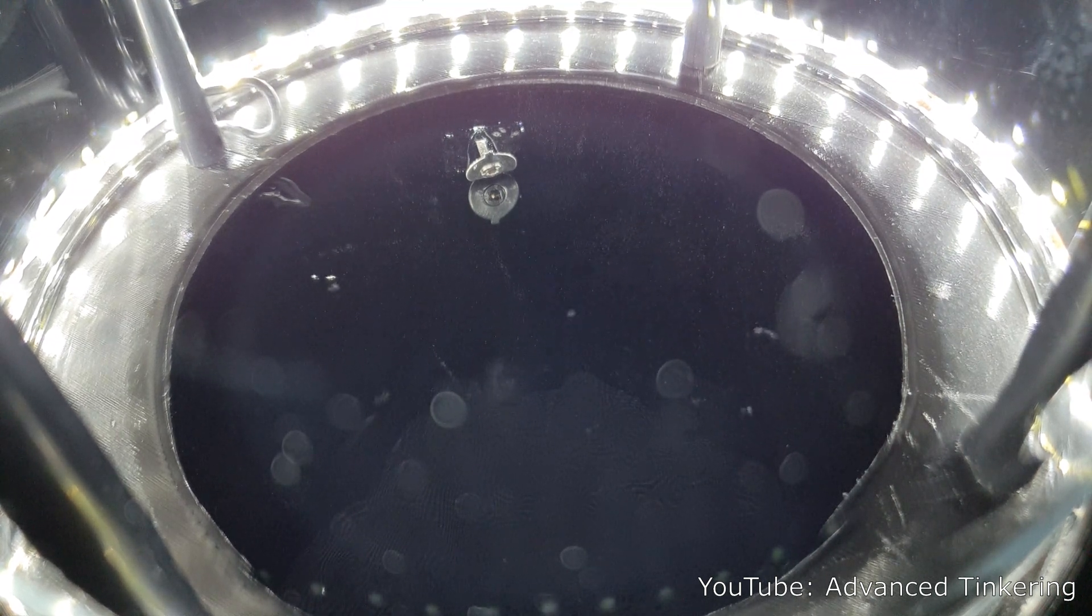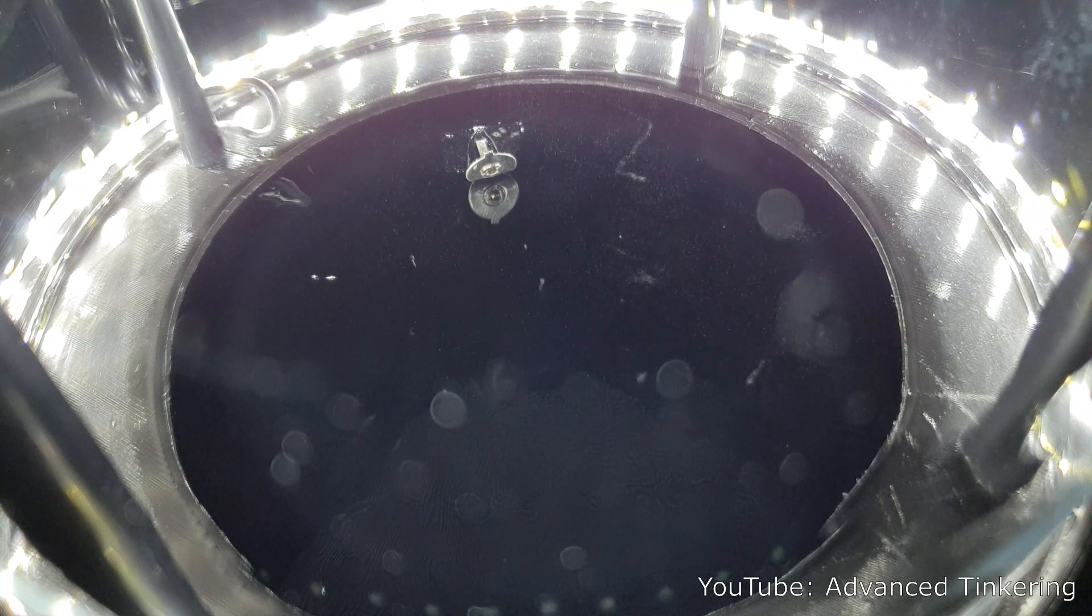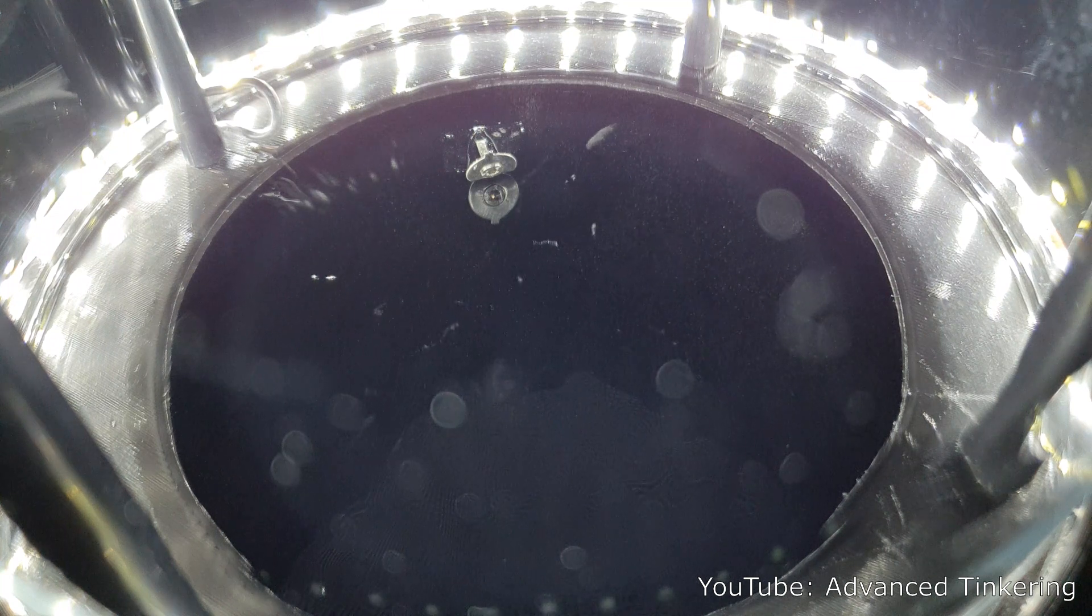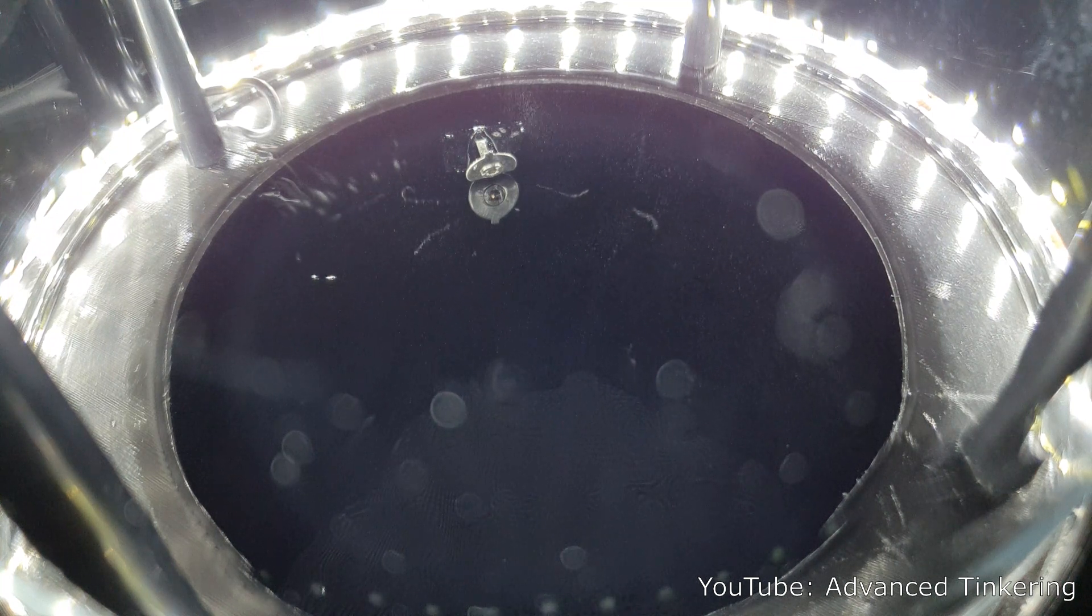You can even differentiate between different kinds of radiation. Alpha particles will form thick and short tracks, while beta particles will form thinner and curved tracks.